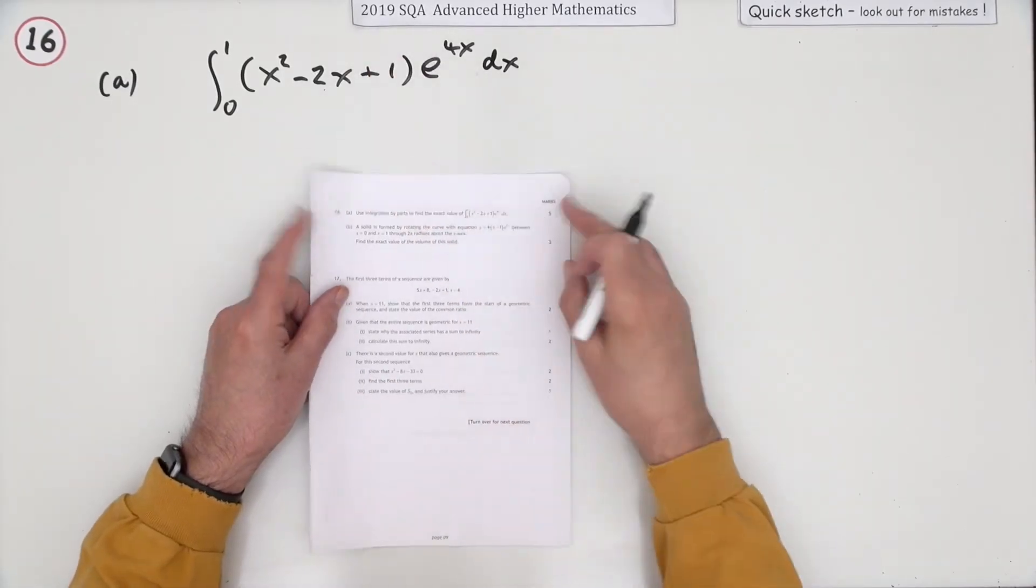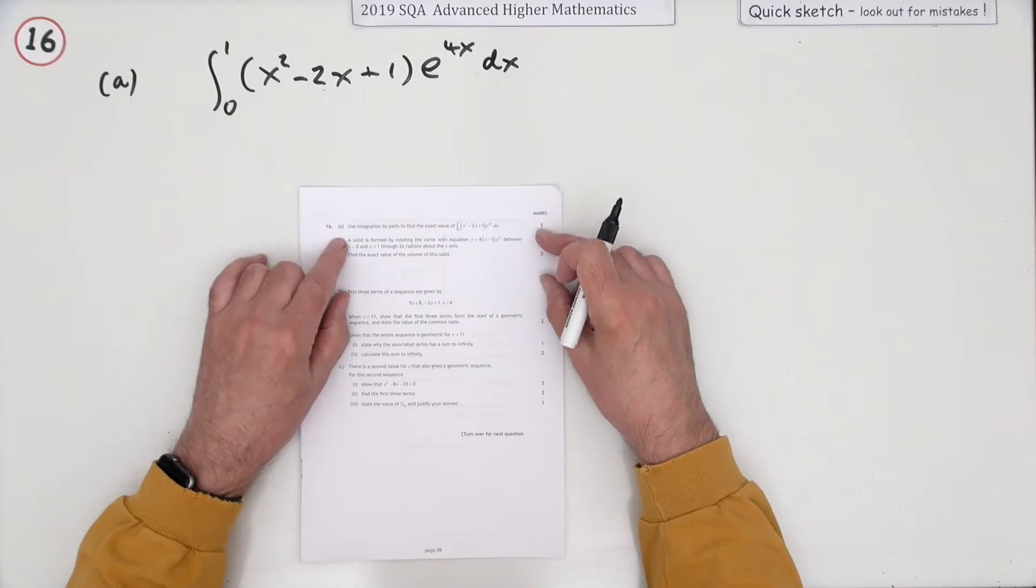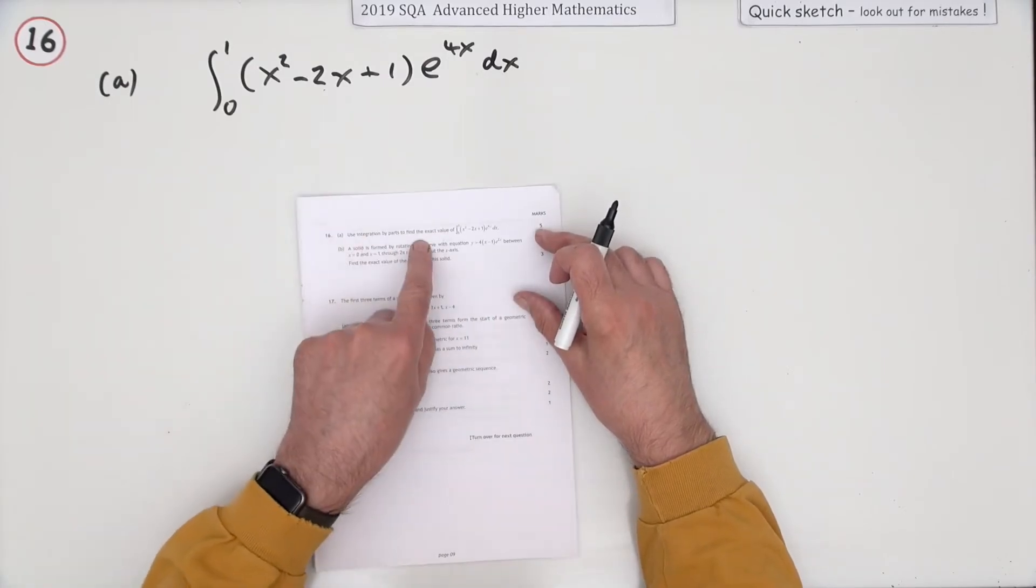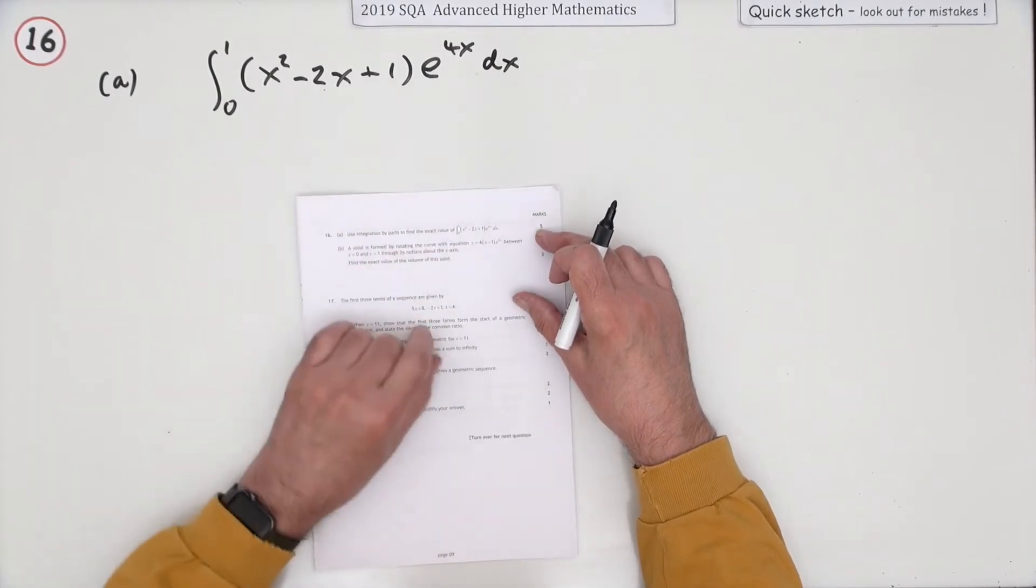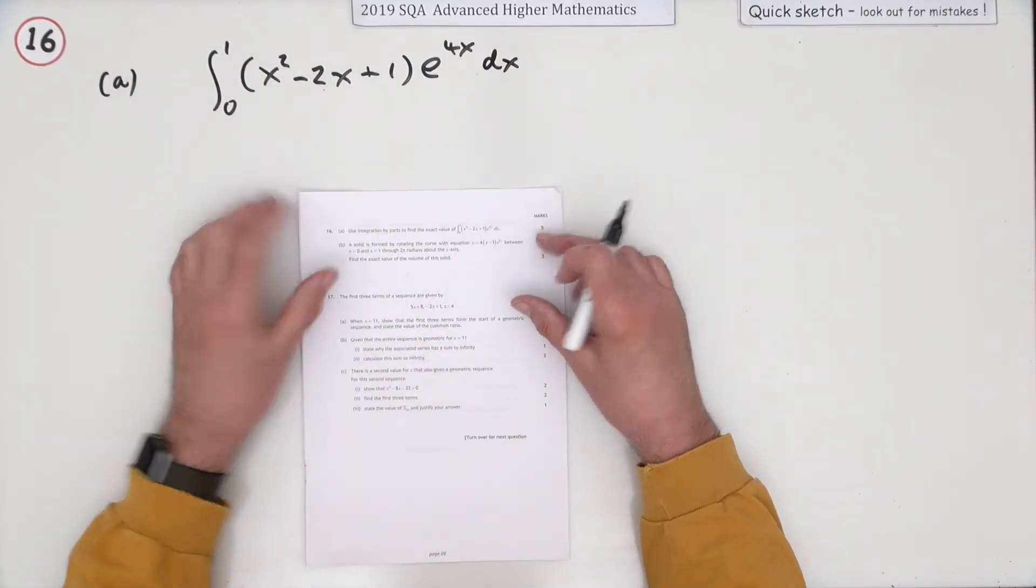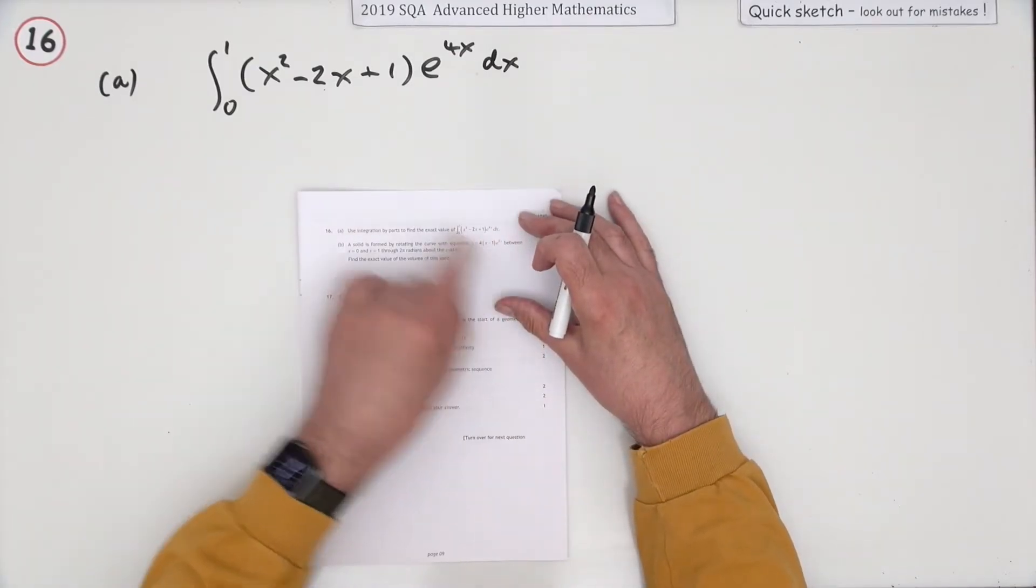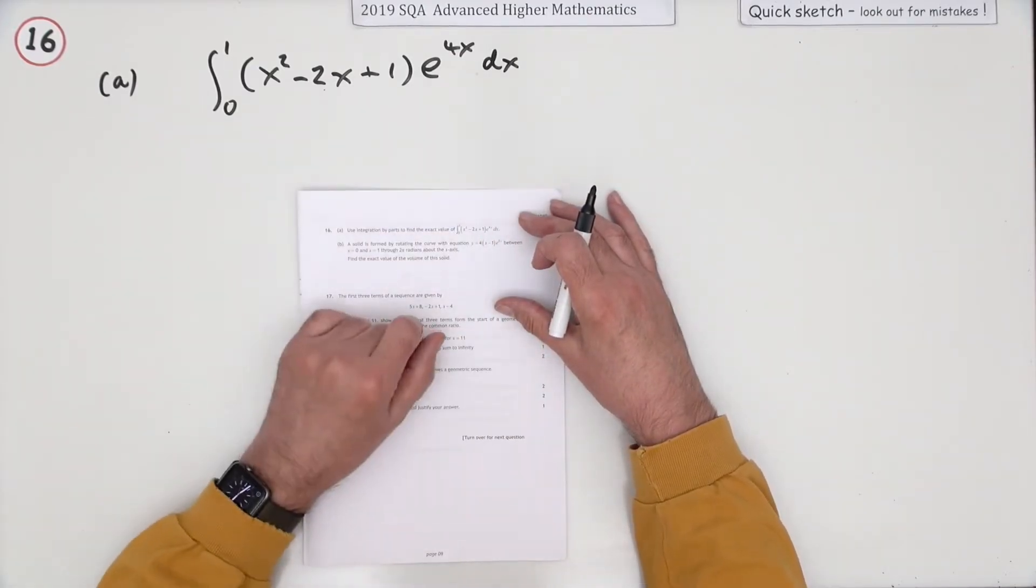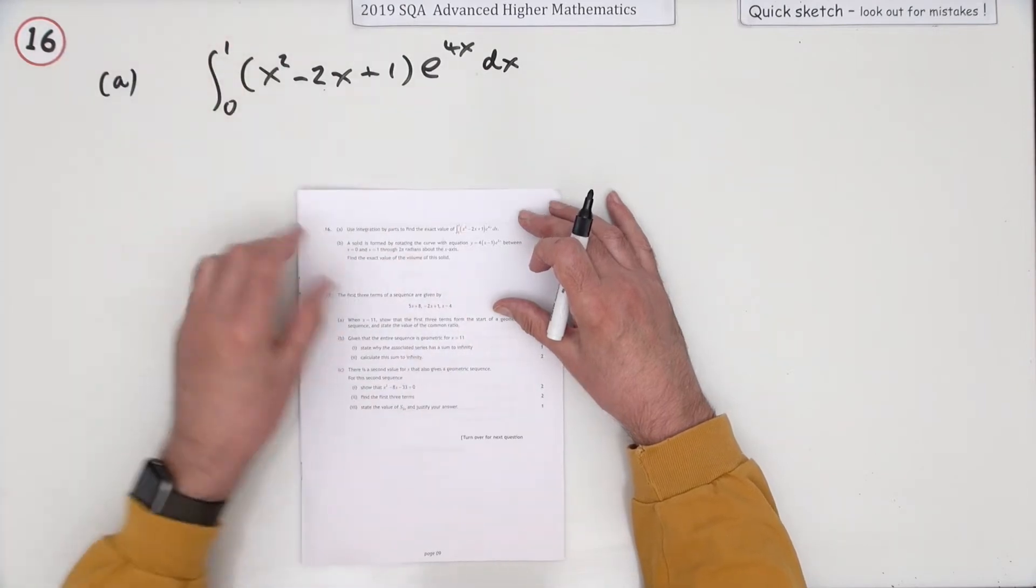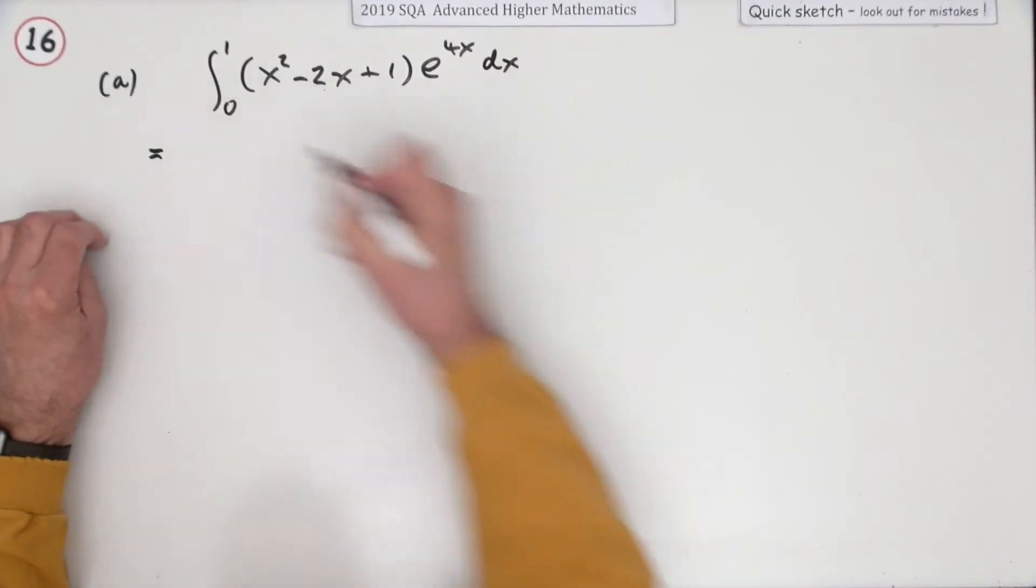Number 16 from the 2019 Advanced Higher Maths, an 8 mark question. First five marks: use integration by parts to find the exact value of this. Notice it's a definite integral, that's always a pest because you have to show it's being evaluated and looks a bit over the top. I've got three terms here and it's an x squared, you're gonna have to go through it all twice. Nothing you can do, you just have to get on with it.